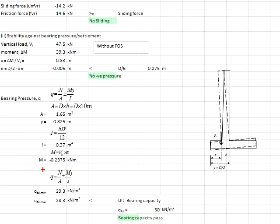Substituting the relevant values into the equations, we obtain the stresses as 29.3 and 28.3 kN/m². The bearing capacity is given as 50 kN/m², which is larger than the maximum stress.